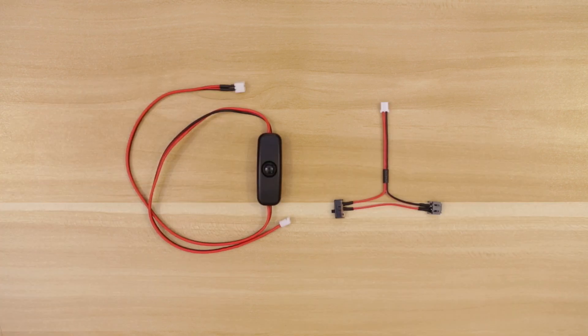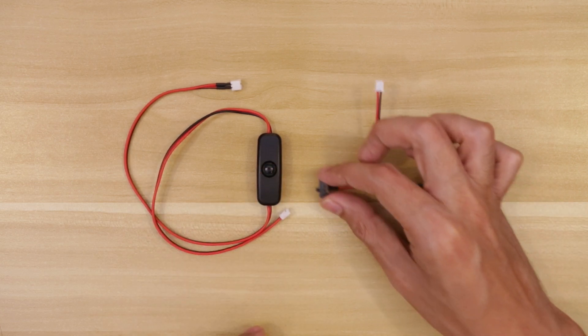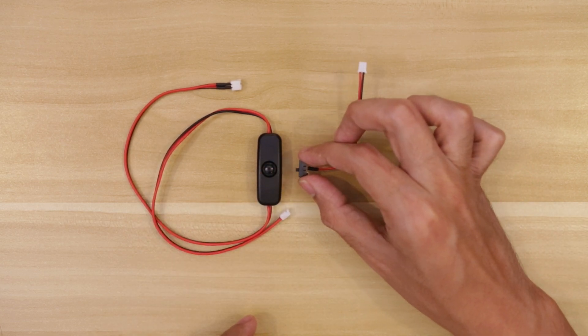Now, we do have pre-made JST extension cables with an on and off switch, but it's kind of bulky and oversized. So it's better if we fashion our own, that way it's much easier to embed into our projects.